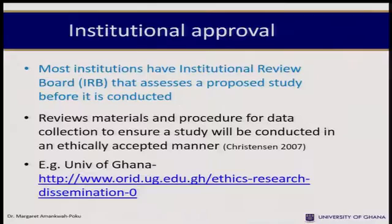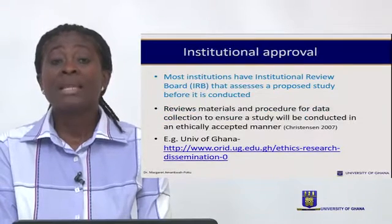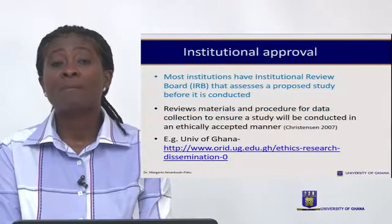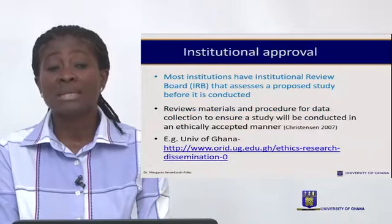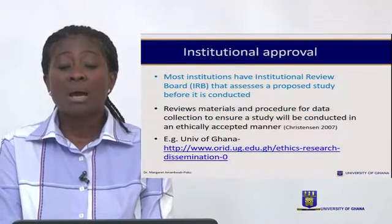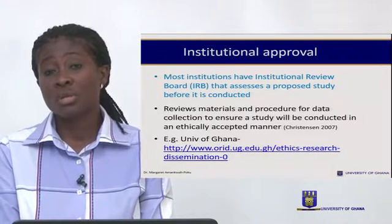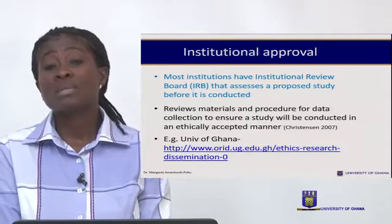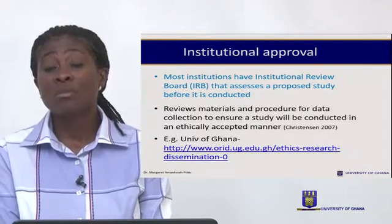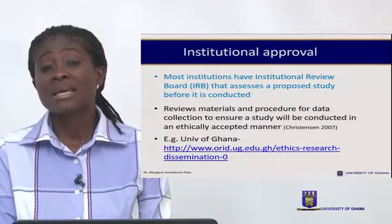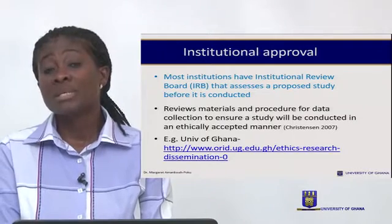The first guideline is institutional approval. Usually when you are doing research, you need an institution's approval to conduct the research. Most institutions have what you call the Institutional Review Board — the IRB — who assess your research proposal before you are given approval. You present a proposal written in future tense: this is what I want to do, these are the participants I want to test, and this is how I want to test them.